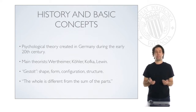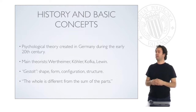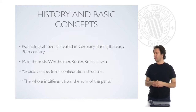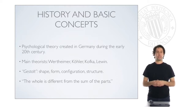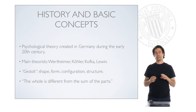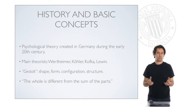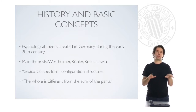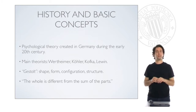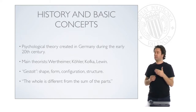New things happen that you cannot understand unless you think of them as a whole. The main theorists were Wertheimer, Köhler, Kafka, and Lewin. One of the main concepts is the concept of Gestalt, which is a German word that cannot be easily translated into English and means something like shape, form, configuration, or structure — a word covering the different meanings of all these English words.